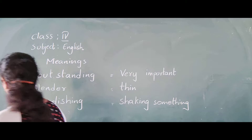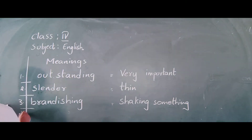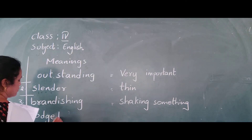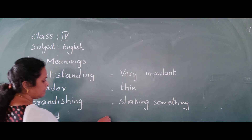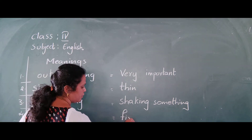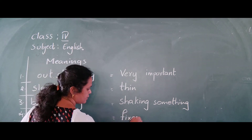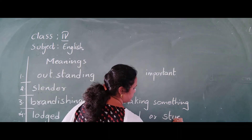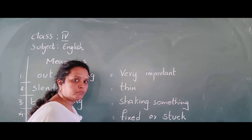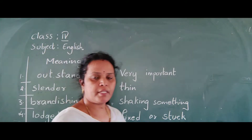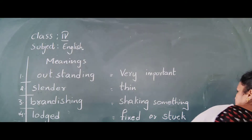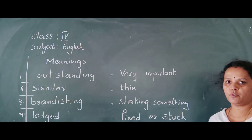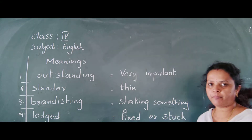Fourth one: Lodged. Leave a line and write lodged. Lodged means fixed or stuck. Pass the video and write, or take a screenshot and later you can copy down from the photos.